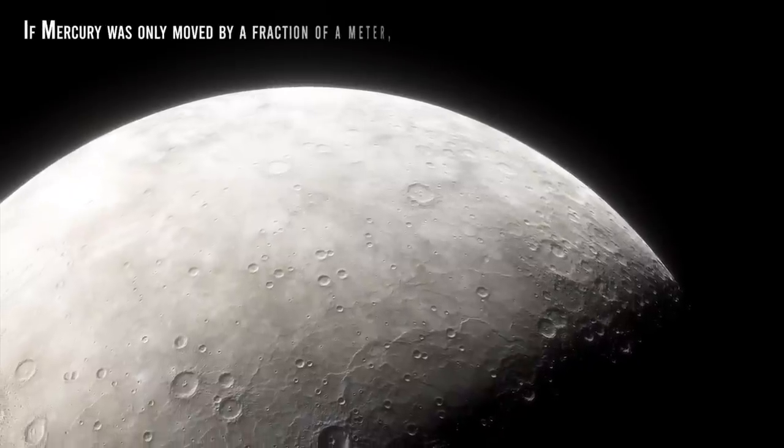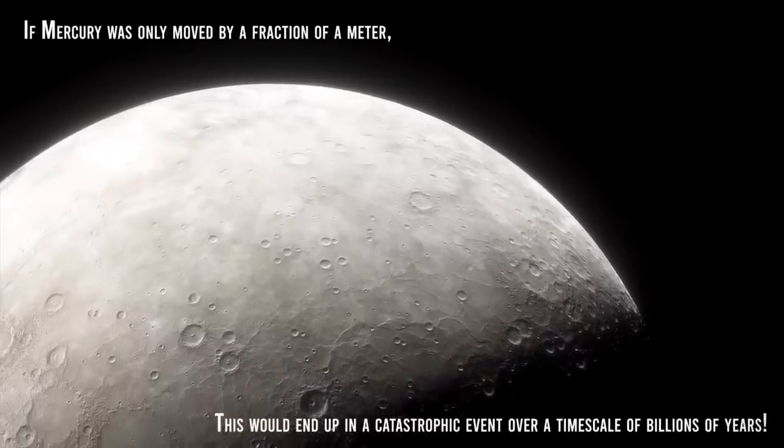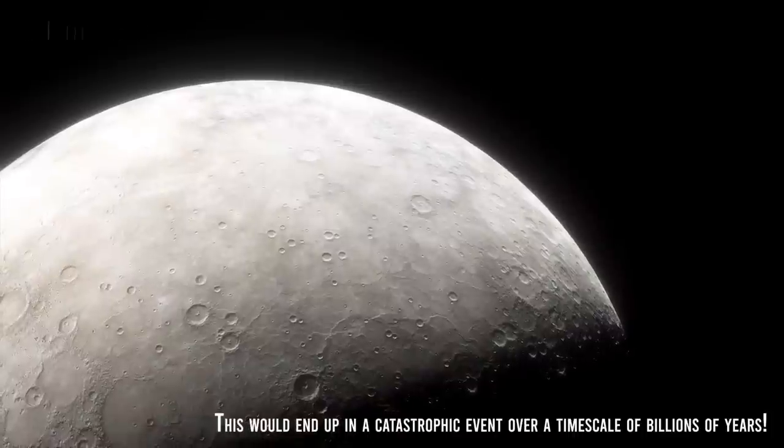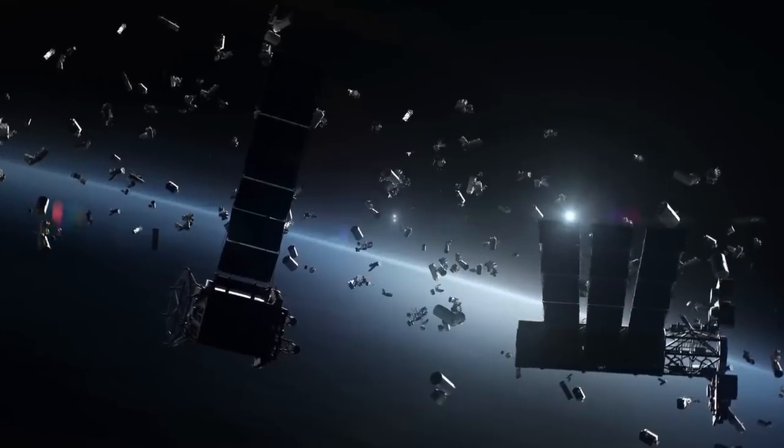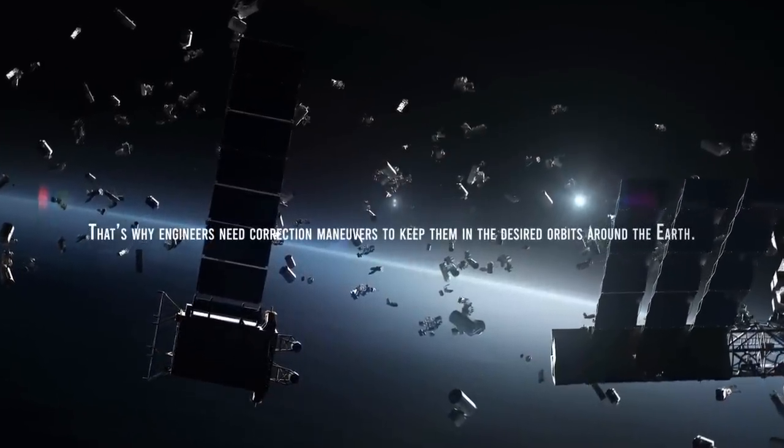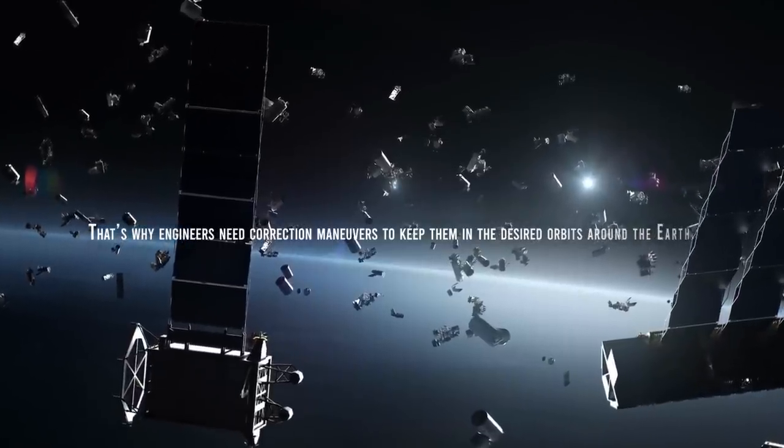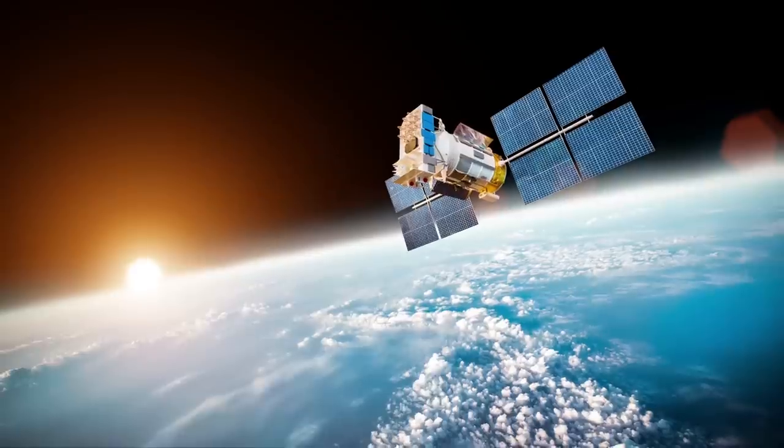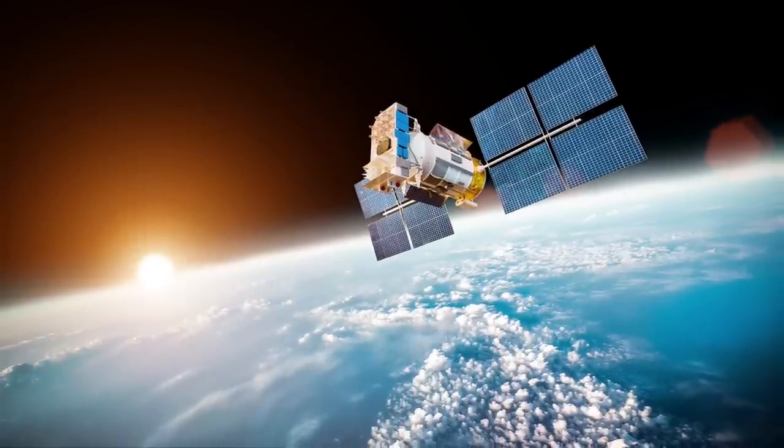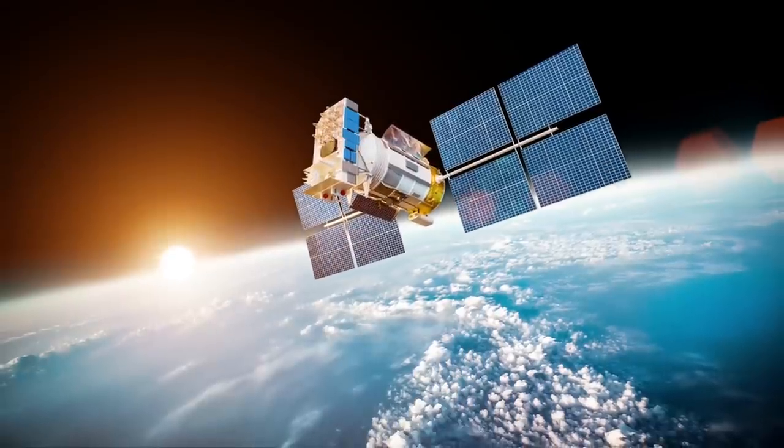If Mercury was only moved by a fraction of a meter, this would end up in a catastrophic event over a timescale of billions of years. The same thing happens to artificial satellites around the Earth. That's why engineers need correction maneuvers to keep them in the desired orbits around the Earth or its Lagrangian points. There are algorithms for that, and they are really hard to implement. There's a lot of research going on to ensure the stability of these orbits.